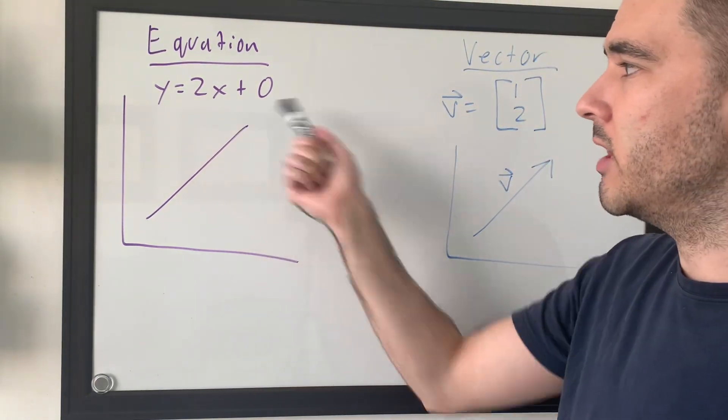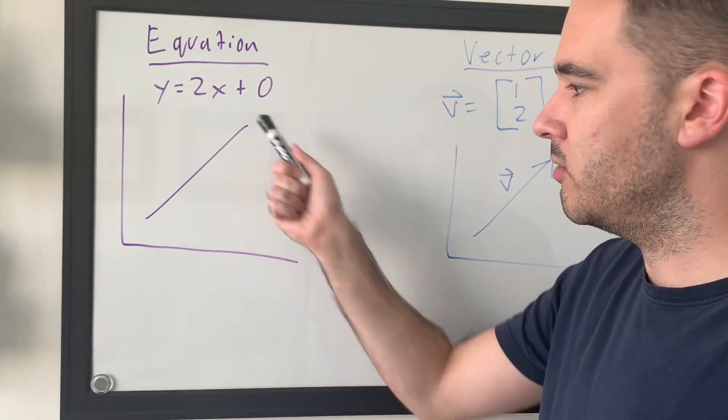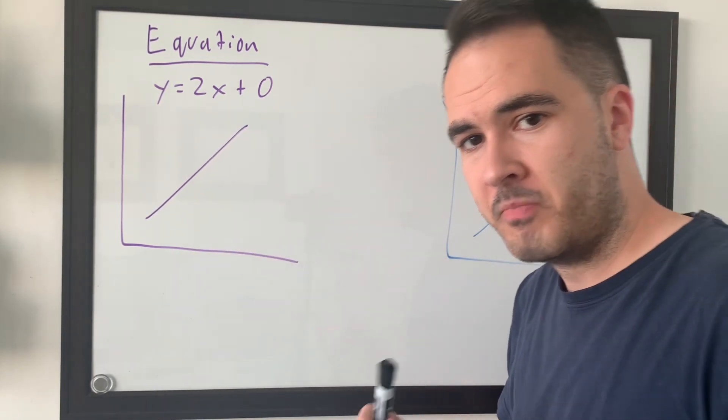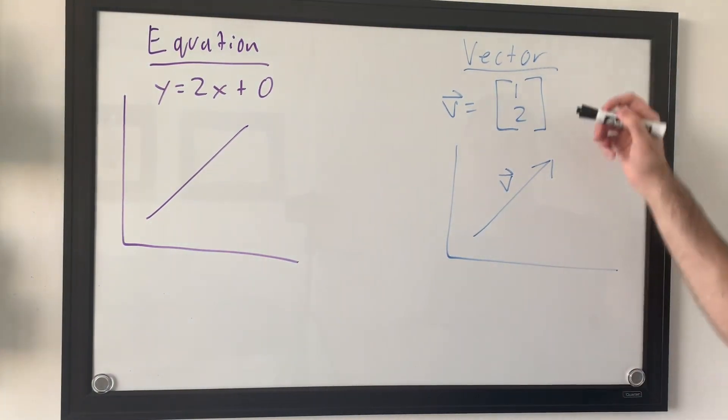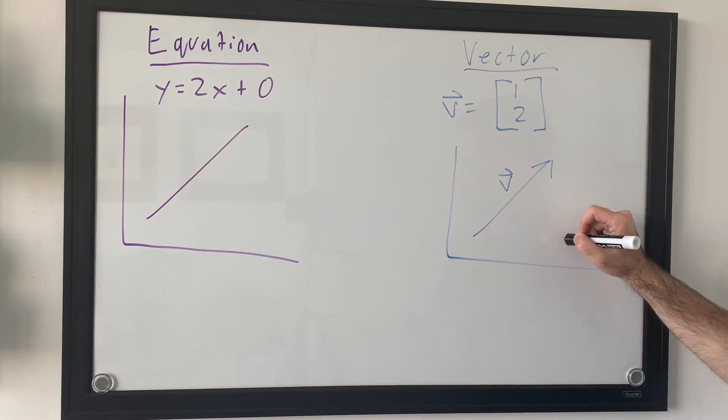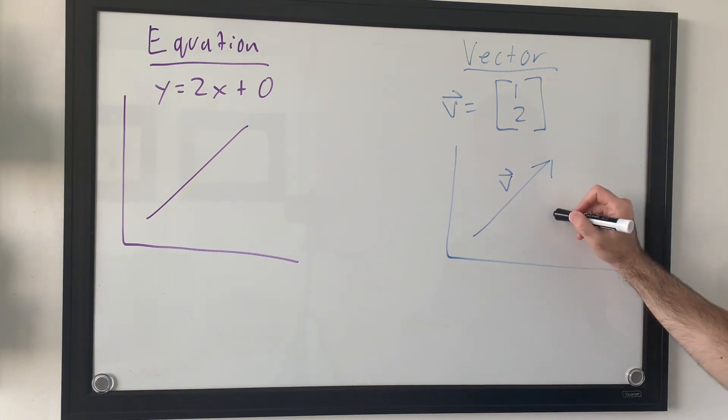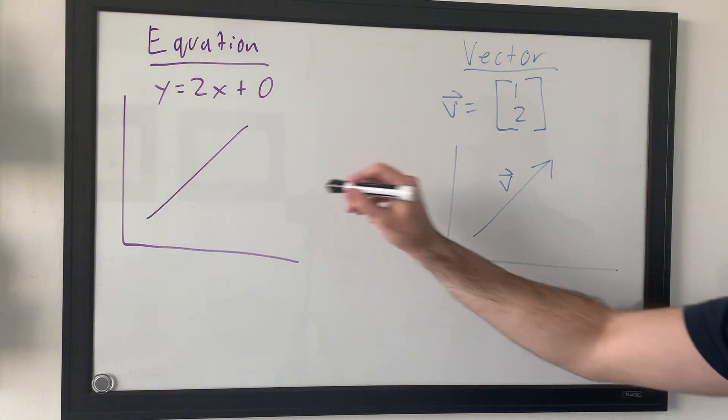So, in this example, I've done Y equals 2X. Every time we move one unit to the right, we're going to move two units up. Similarly, if you were to describe the same line with a vector, you would have it as this, where the vector is 1, representing the number of units in the X direction, and 2, representing the number of units in the Y direction. These both are illustrating the same line.